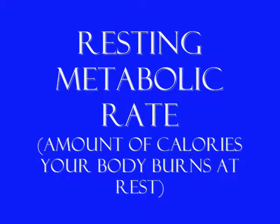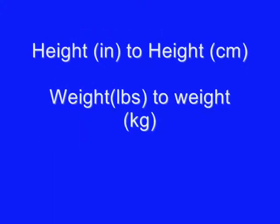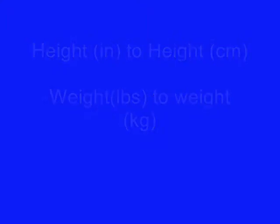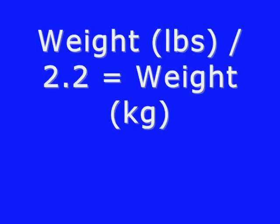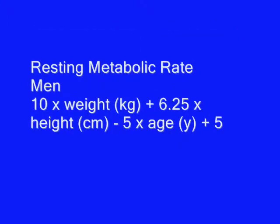We're going to start with your resting metabolic rate, which is the amount of calories your body burns at rest. To figure this out, we first need to convert your height from inches to centimeters and your weight from pounds to kilograms. Take your height in inches and multiply it by 2.54 — that gives you your height in centimeters. Then take your weight in pounds and divide it by 2.2 — that gives you your weight in kilograms.